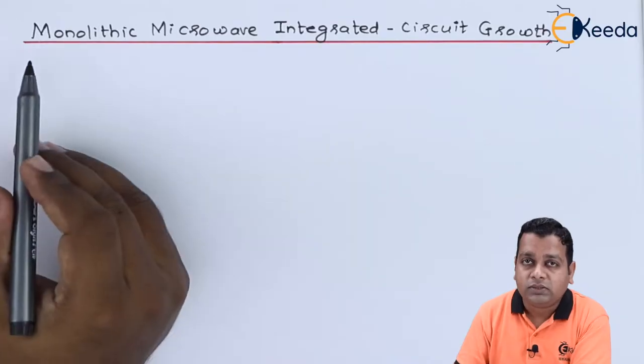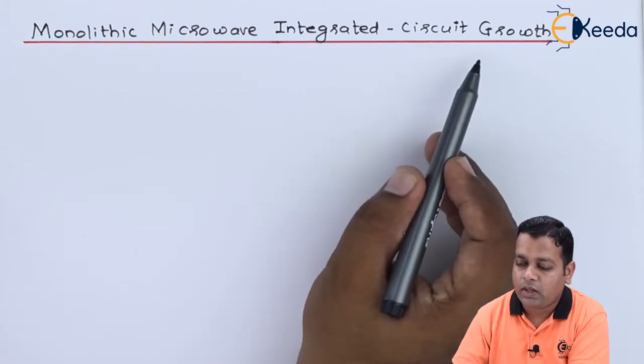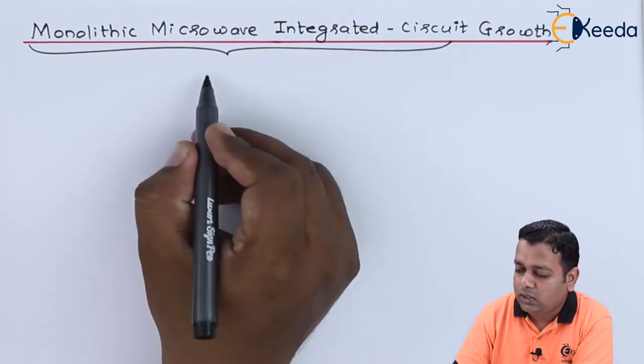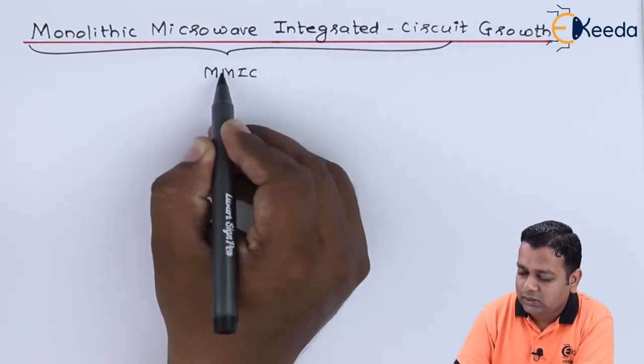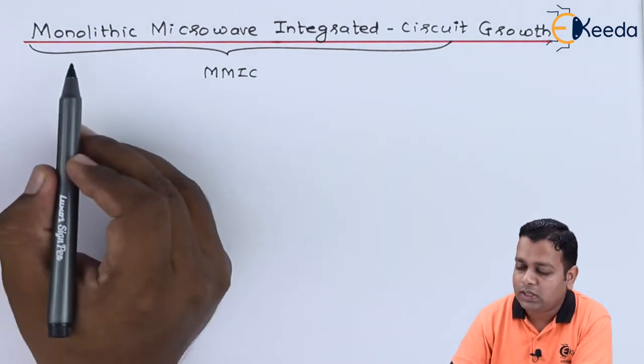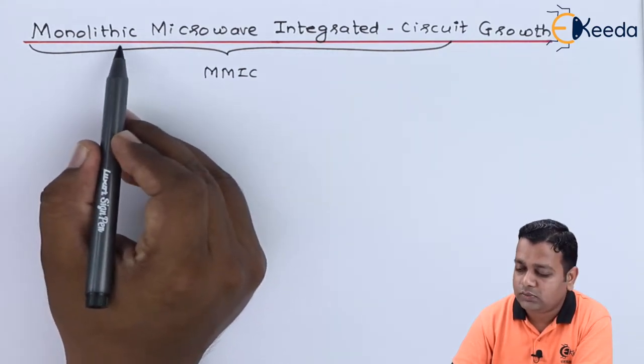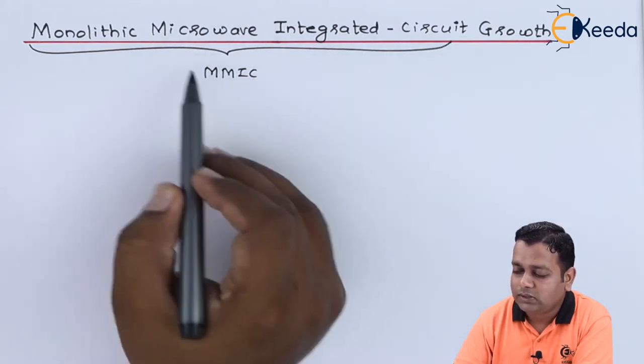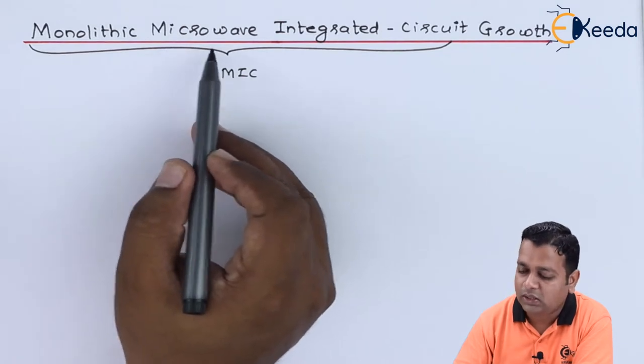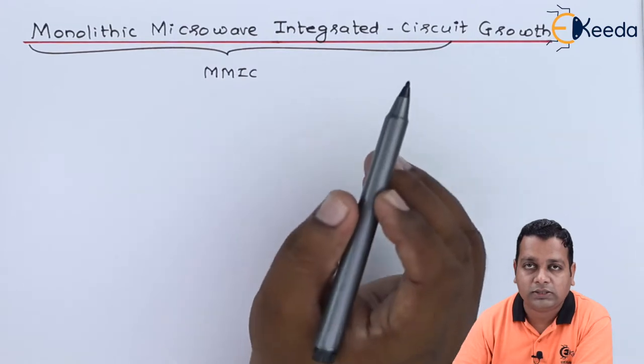So here we start with our topic, monolithic microwave integrated circuit growth. Now for the monolithic microwave integrated circuit we can make the abbreviation MMIC. So I hope it is very clear, monolithic is for the single unit into the stone here. Monos means single, lithos means stone. So when the device is formed as the integrated circuitry for the microwave signal inside the same crystal, we call it monolithic microwave integrated circuit.